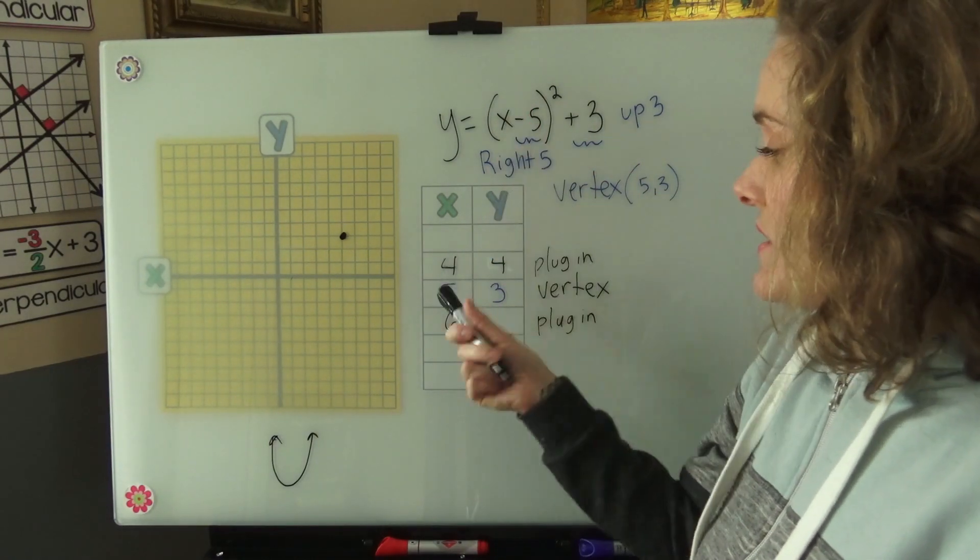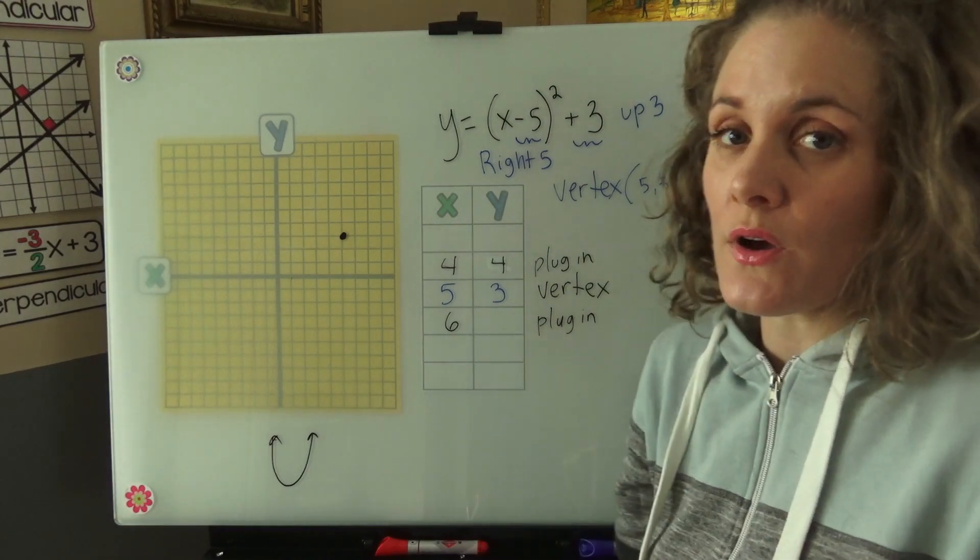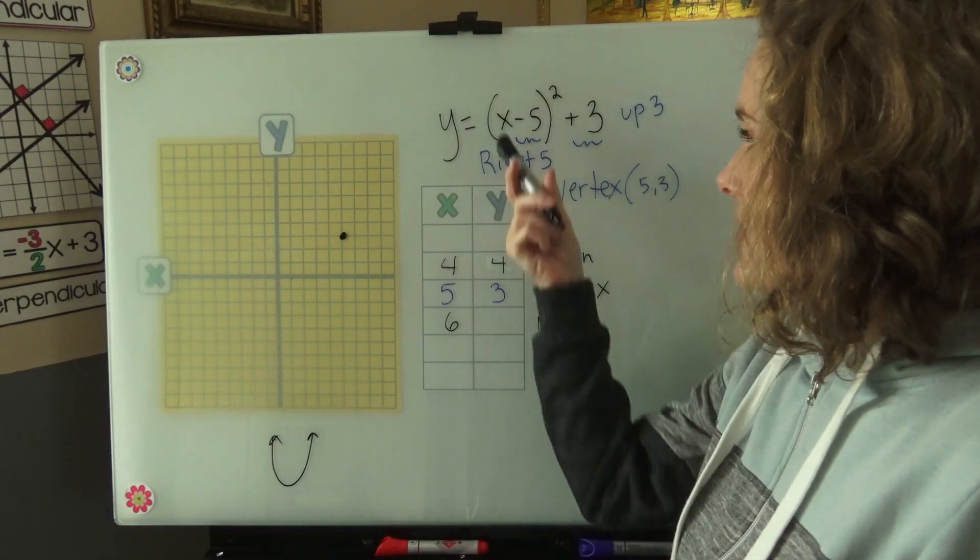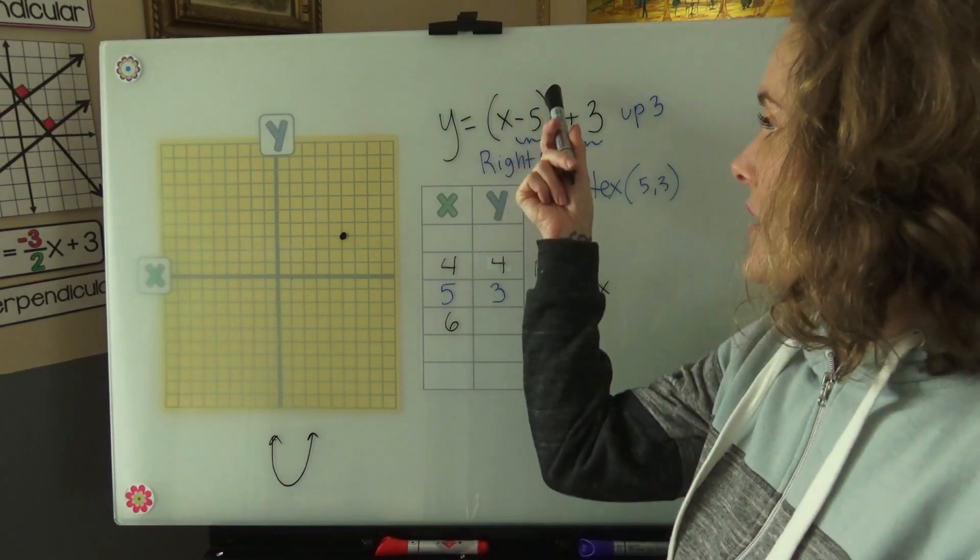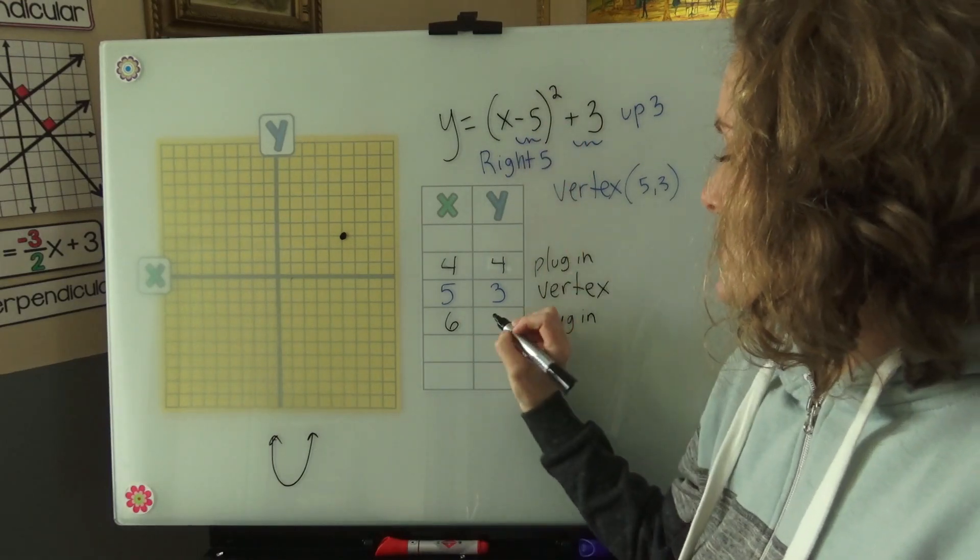Now if we did this correctly, this 6 will come out to be 4 also. 6 minus 5 is 1. 1 squared is 1. 1 plus 3 is 4.